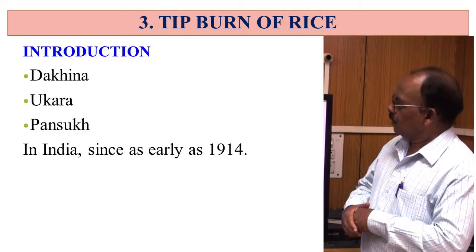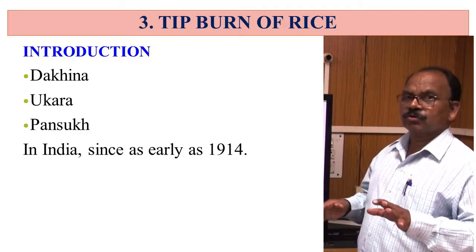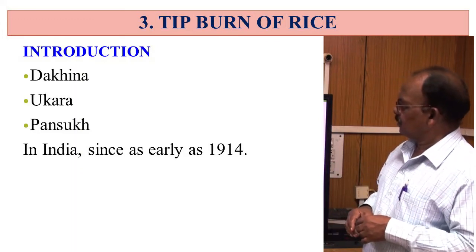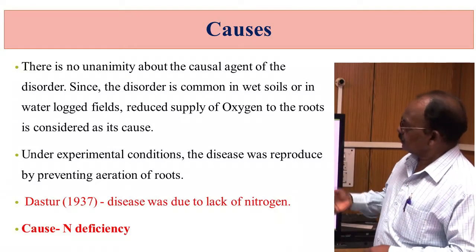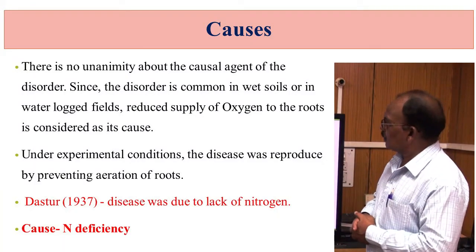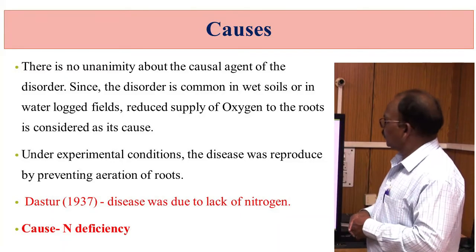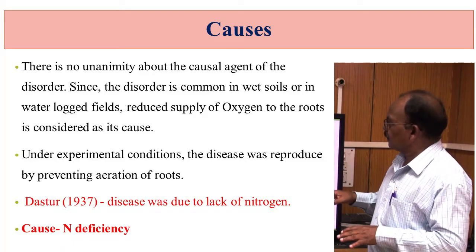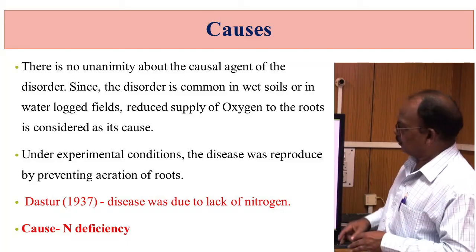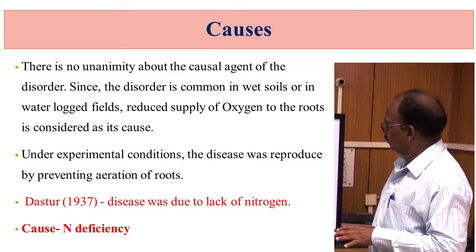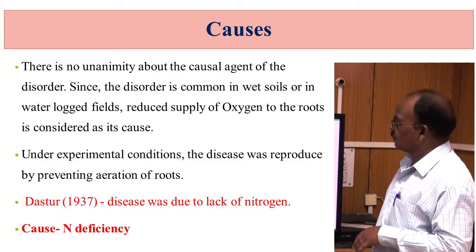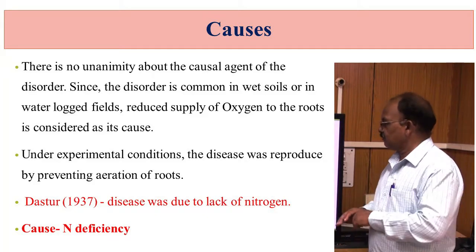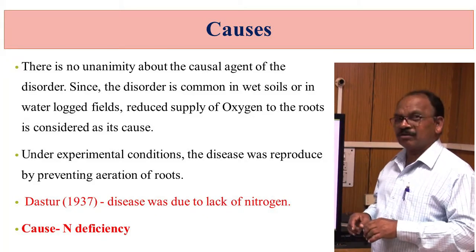Tip burn of rice is also known as Dakina, Urkara, or Paan Suk. In India it has been known since early 1914. There is no unanimity about the causal agent of the disease. Since the disease is common in wet soil or waterlogged conditions, reduced supply of oxygen to the roots is considered its cause. Under experimental conditions, the disease was reproduced by preventing aeration of the roots. According to Dashtur in 1937, the disease was also caused due to lack of nitrogen.